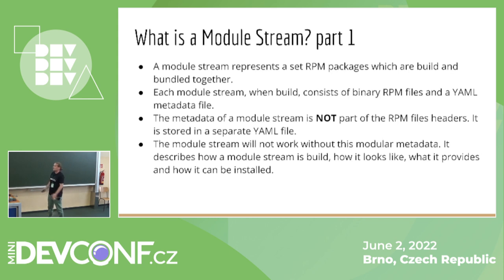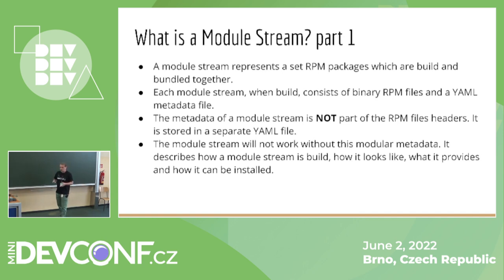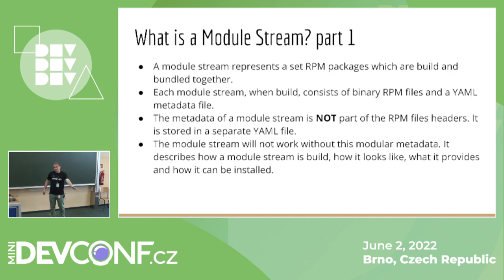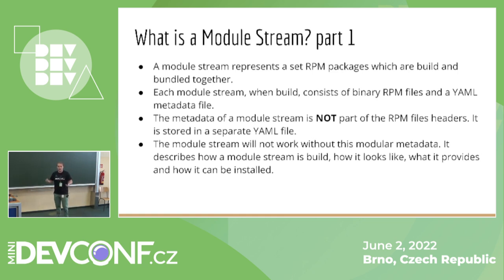A module stream represents RPM packages which are built and bundled together. Each module stream consists of RPM binary files and a metadata YAML file. This is important because if you have only the binary files, you cannot install them without the metadata. DNF will not allow you to do that, because RPMs built in Fedora or other distributions have a failsafe inside that doesn't allow it.